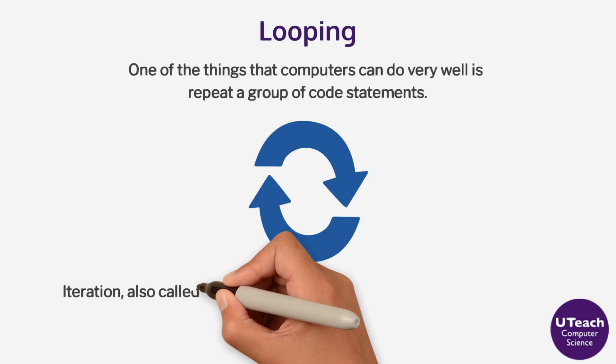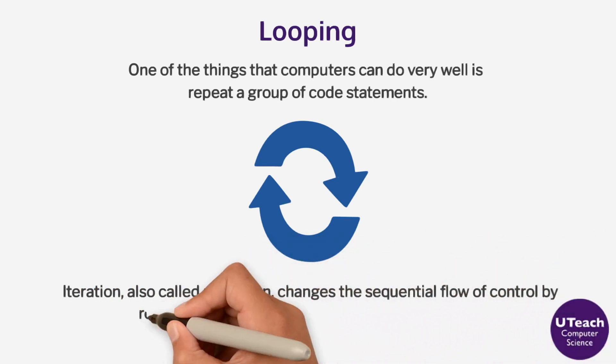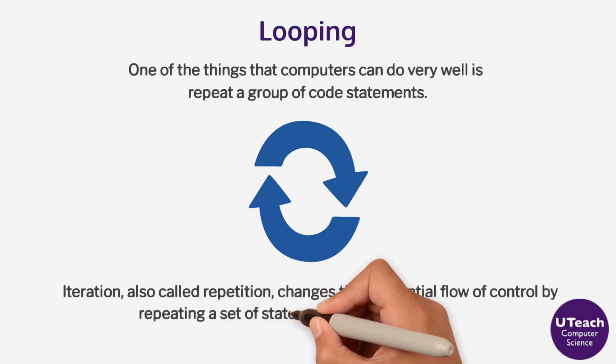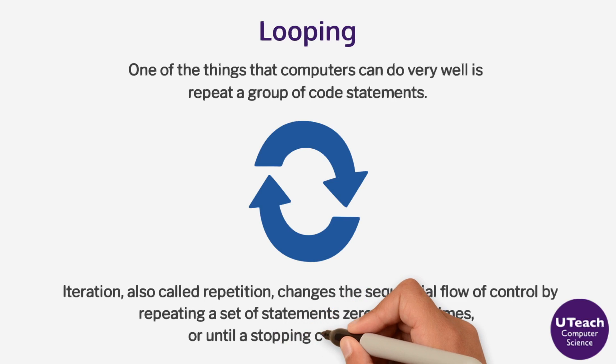Iteration, also called repetition, changes the sequential flow of control by repeating a set of statements zero or more times, or until a stopping condition is met.